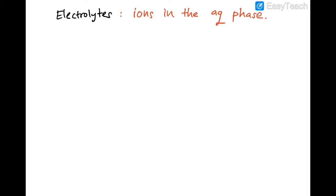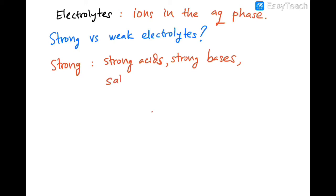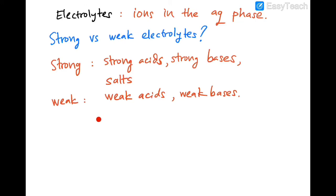Some compounds in nature will become strong electrolytes and others are weak electrolytes. Strong electrolytes usually comprise strong acids, strong bases, and salts. Weak electrolytes comprise weak acids and weak bases. You need to be able to remember and get familiarized with strong acids versus weak acids, and strong bases versus weak bases.